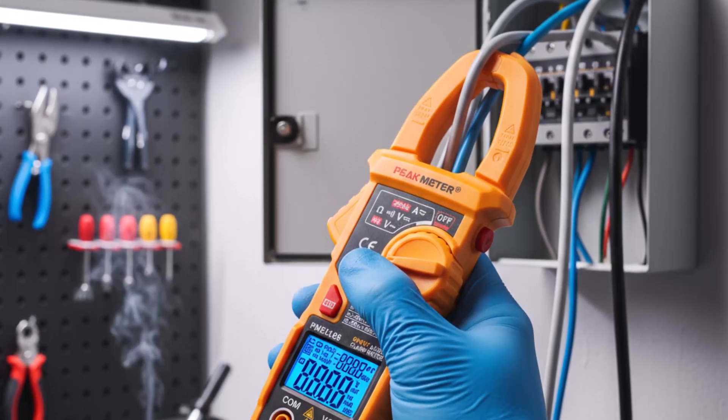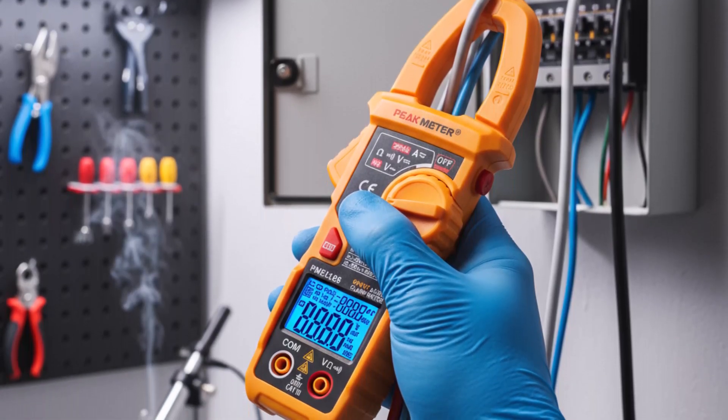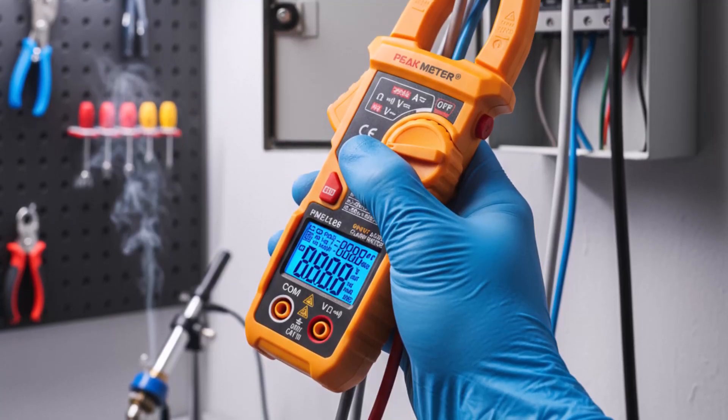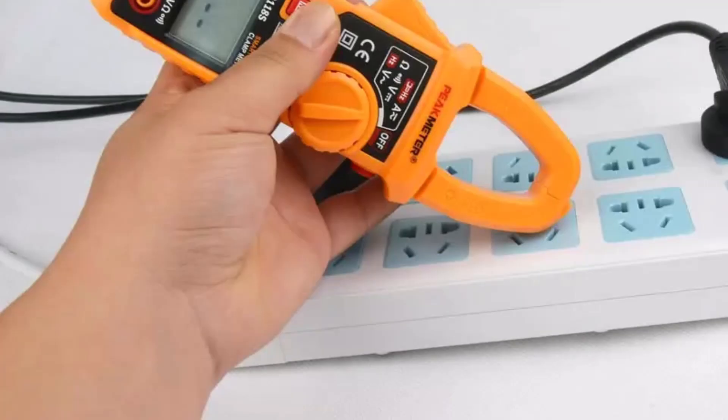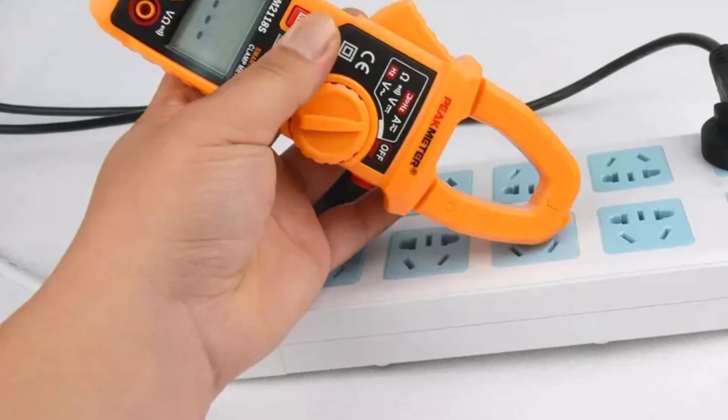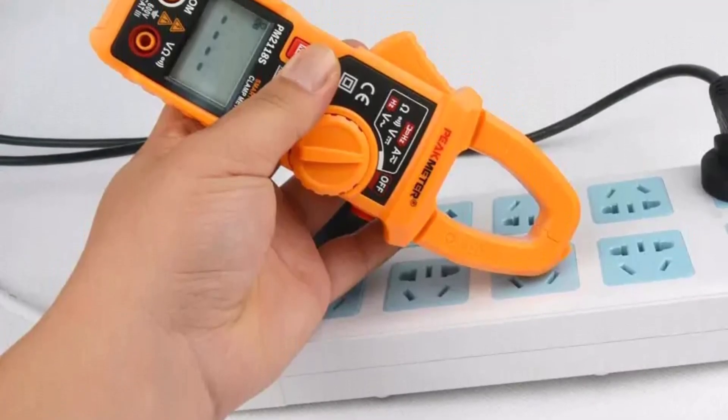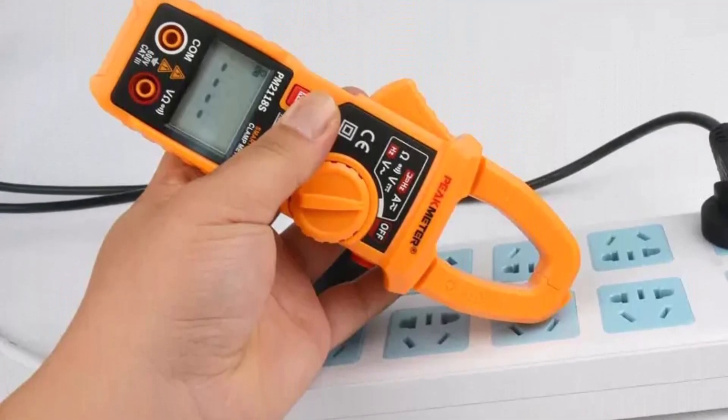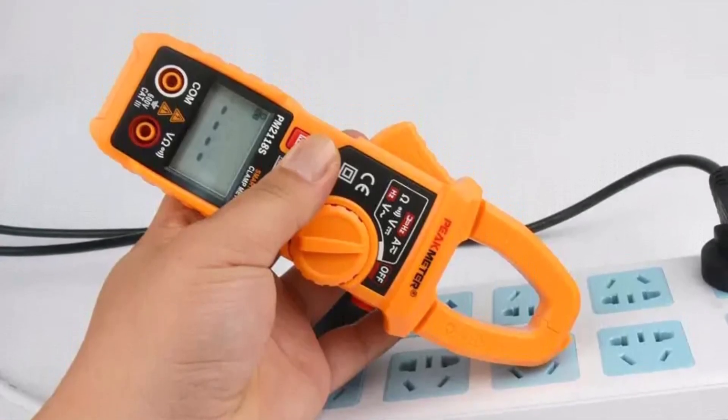With its blend of automatic operation, safety certifications, and user-friendly design, the Peak Meter PM2118S stands out as an excellent choice for anyone seeking a reliable and easy-to-use clamp meter for everyday electrical tasks.